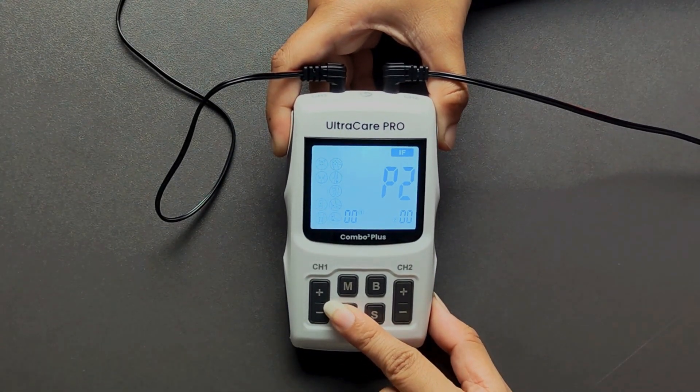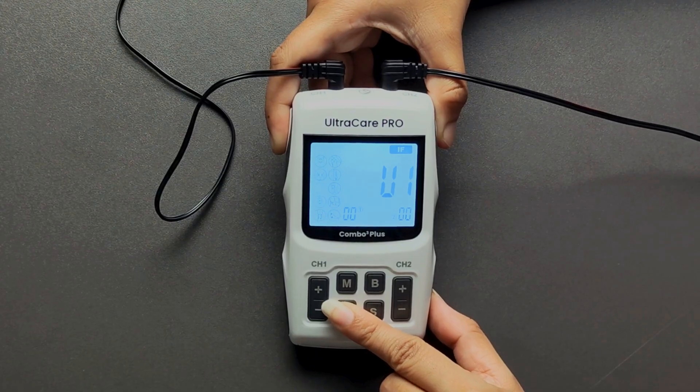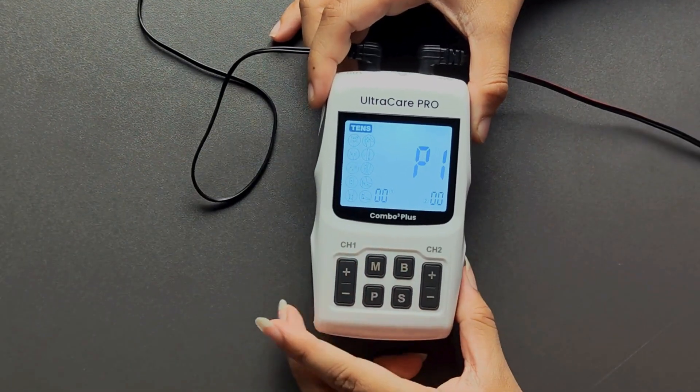P1 is for acute pain, P2 is for chronic pain. UN is a manual mode and should only be used under professional guidance.